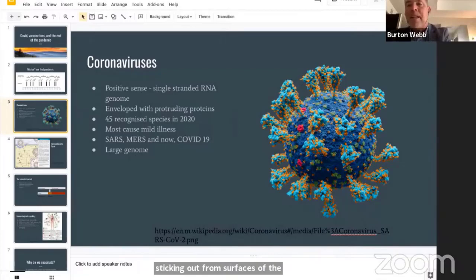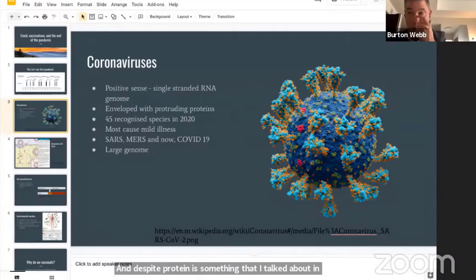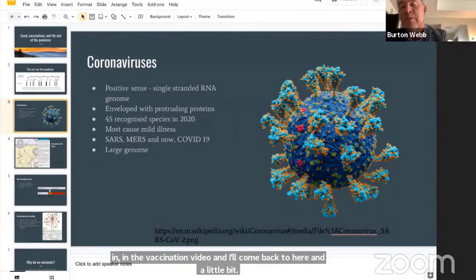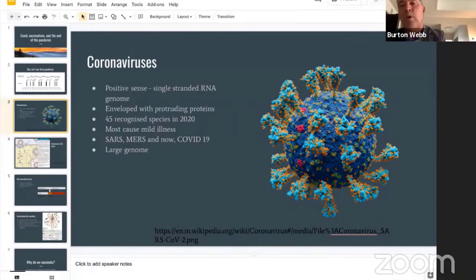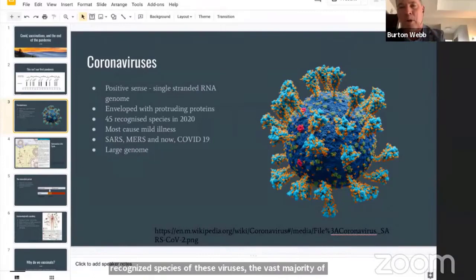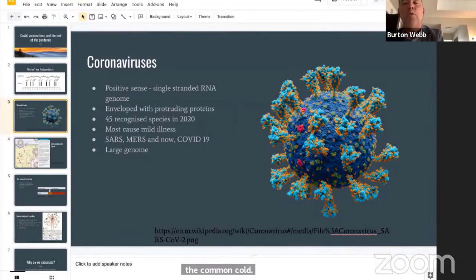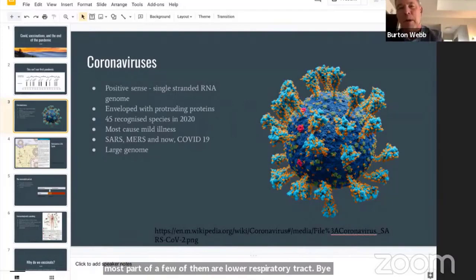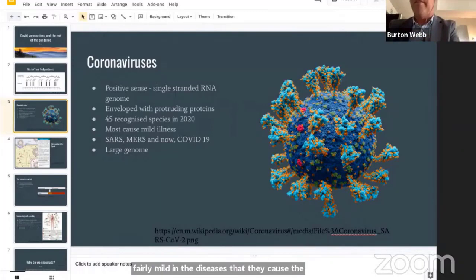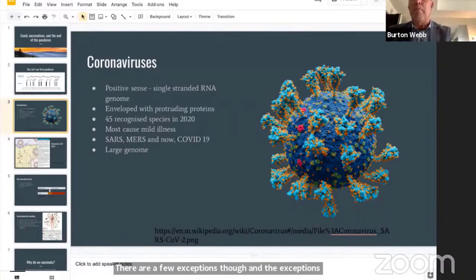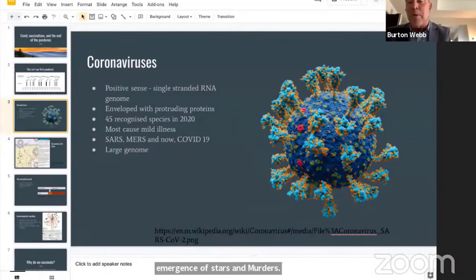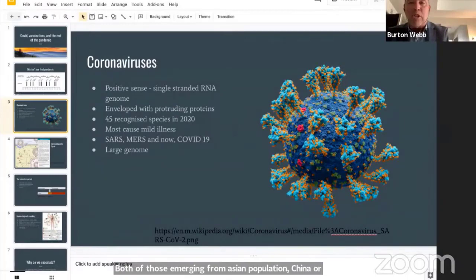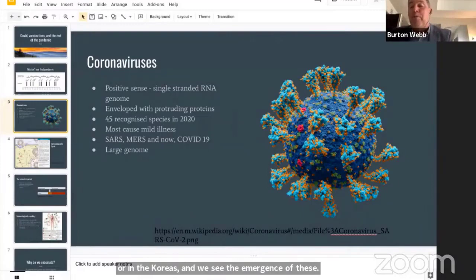That spike protein is absolutely essential for the attachment phase of this virus's life cycle. So far in coronaviruses, there are at least 45 recognized species of these viruses, the vast majority of them cause the common cold. These are upper respiratory tract viruses, for the most part. A few of them are lower respiratory tract viruses and can cause pneumonia. Most of them are fairly mild in the diseases that they cause. There are a few exceptions, though.